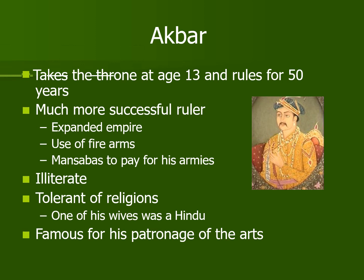The next ruler was Akbar, who was 13 years old when he became emperor. His reign can be divided into three periods: 1556 to 1570, 1570 to 1585, and 1585 to 1605. He was a very successful ruler who expanded his empire and used firearms and the mansab system to pay for his armies. Though he was illiterate, one distinguished feature of Akbar was that he was tolerant towards all religions.